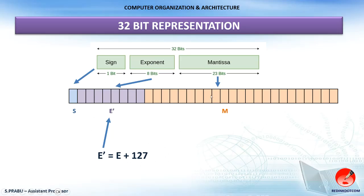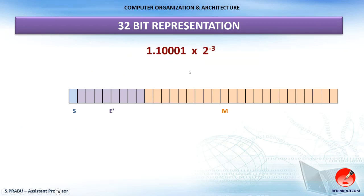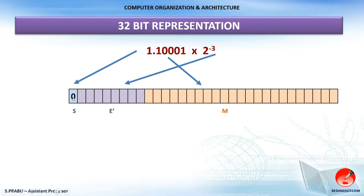Now we understand all the necessary concepts for floating point representation, so let's solve a problem. Given a binary fractional number, we store it in the 32-bit format. First, write the sign bit — since this is a positive number, the sign bit is 0. The exponent value is −3. Using the bias formula: E′ = E + 127 = −3 + 127 = 124. Converting 124 to binary gives 01111100 — an 8-bit number for the exponent field. Then the actual mantissa (fractional part) is written into the remaining 23 bits.